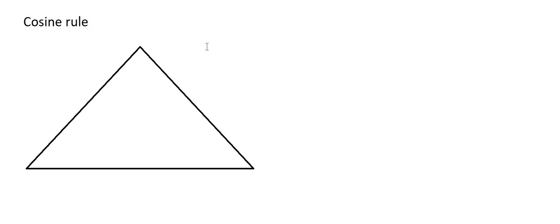Okay, so here's how we use the cosine rule, just to remind you. So if this is angle A, this is side a. This is angle B, this is side b. If this is angle C, this is side c.